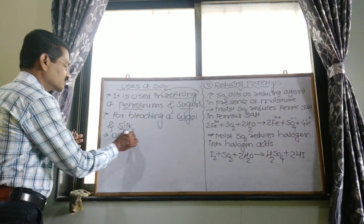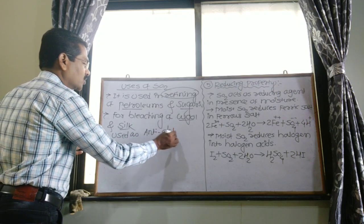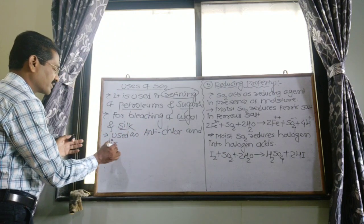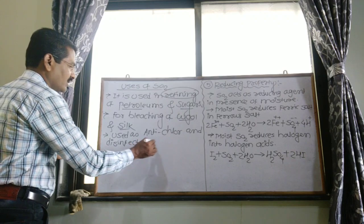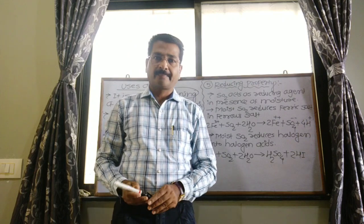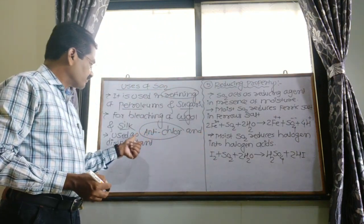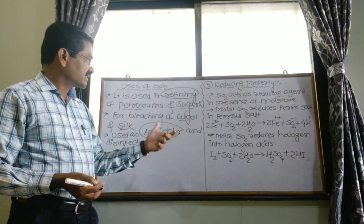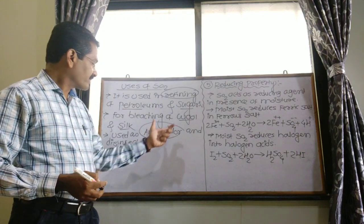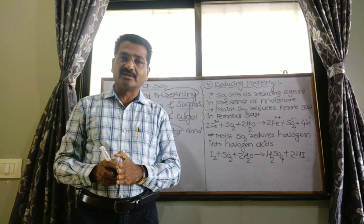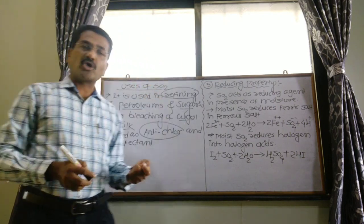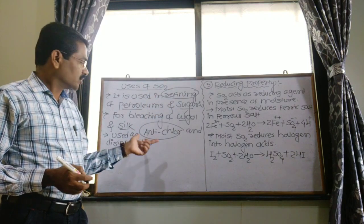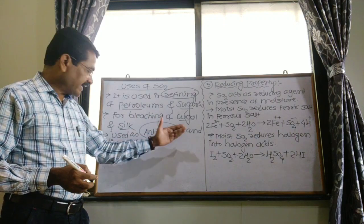Next, sulfur dioxide is used as an anti-chlor and disinfectant. In vehicle engines, sulfur dioxide can help reduce noise, so it is called anti-chlor. As a disinfectant, whenever a person suffers from wounds, microorganisms on the wounds can be treated using sulfur dioxide. So sulfur dioxide is used both as anti-chlor and as a disinfectant.